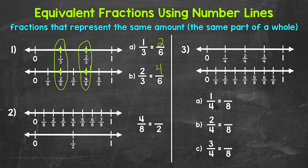Let's move on to number two, where we have four eighths is equivalent to how many halves. The top number line shows eighths, and the bottom number line shows halves. Four eighths is right here, and we can see that one half is at the same place on the number line. Four eighths and one half are equivalent fractions.